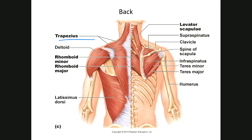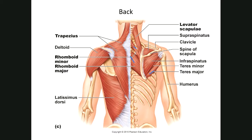On our back we have a few things to look at. The trapezius is triangular and goes all the way up and to the sides. Here are our deltoid and latissimus dorsi. This is the levator scapulae — think about levitating the scapula, here's your scapula.